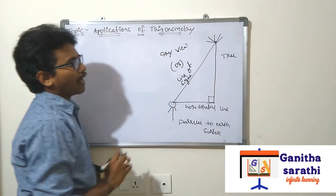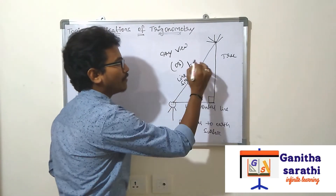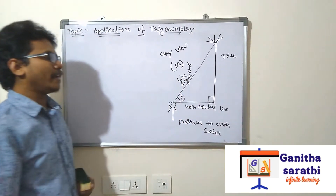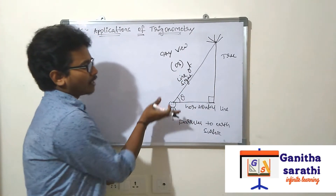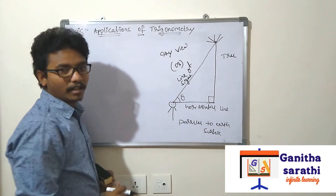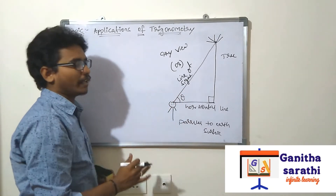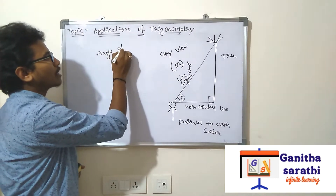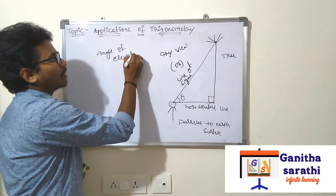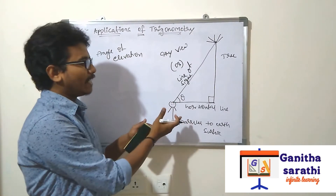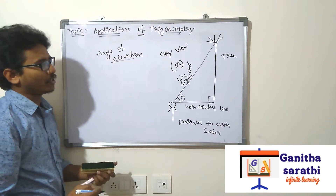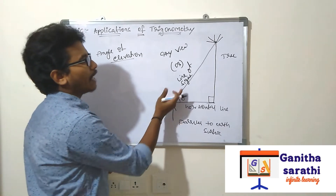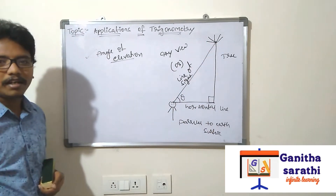We have to find the angle at which the person is observing the top of the tree. Take this angle as theta. The theta is above the horizontal line. If the angle is above the horizontal line, that is called angle of elevation. The angle between line of sight and above the horizontal line is called angle of elevation.